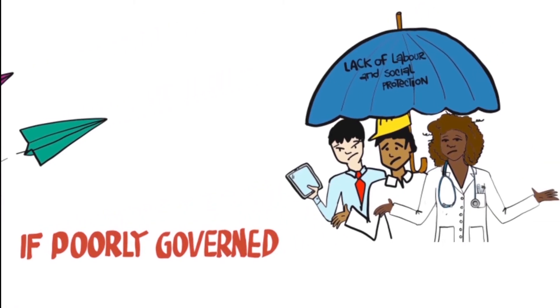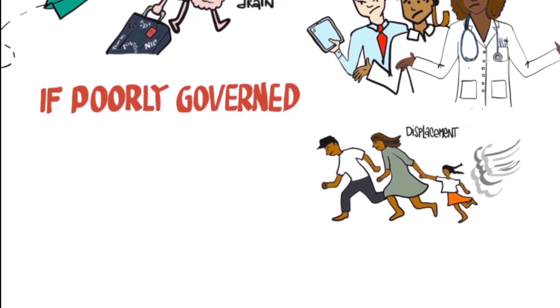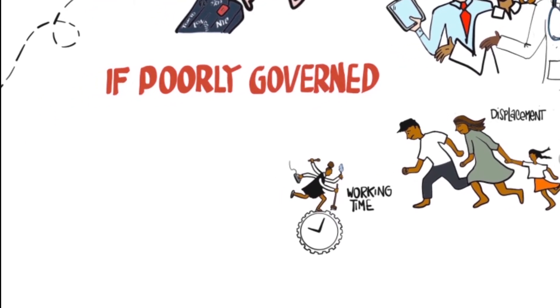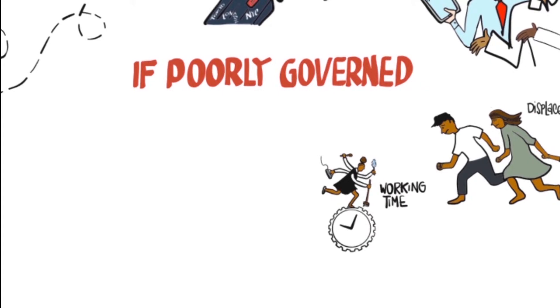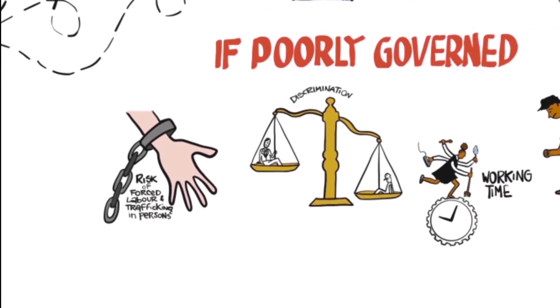These include the lack of labour and social protection, brain drain, displacement, abuses in terms of working time and wages, occupational health hazards, discrimination and a risk of forced labour, including trafficking in persons.